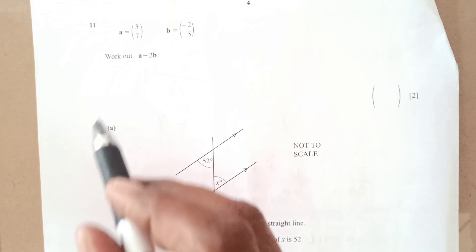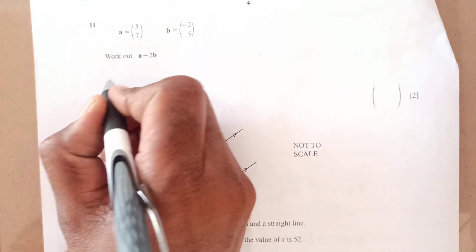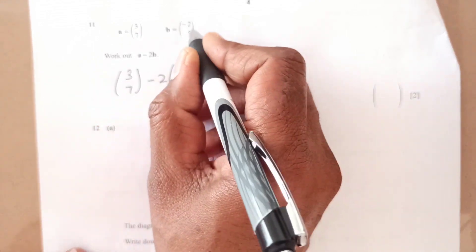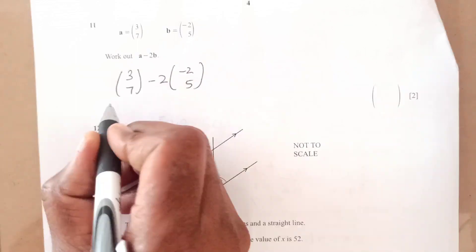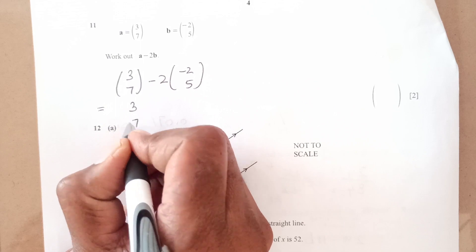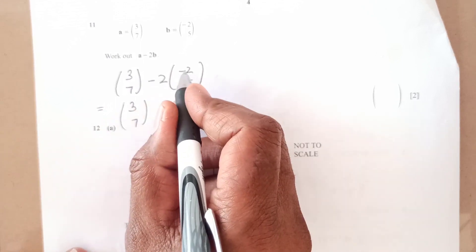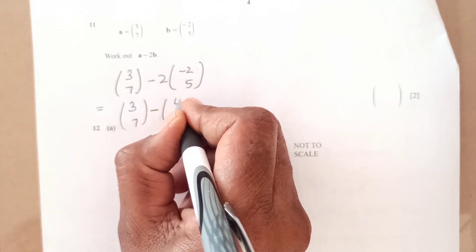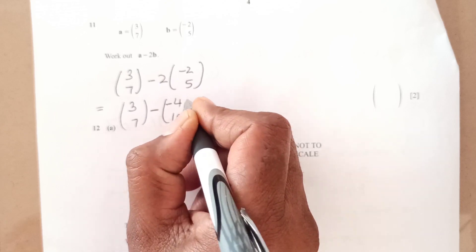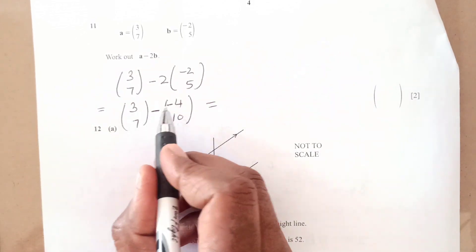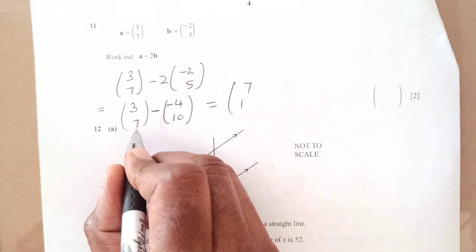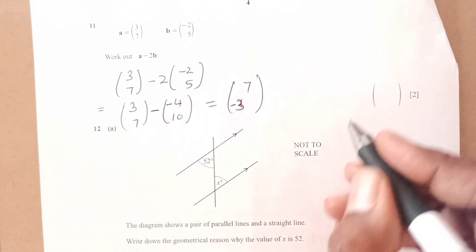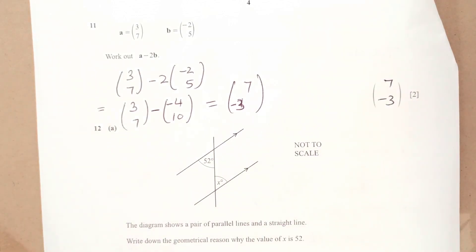Question 11, a and b are given. Work out a minus 2b simple. Just replace the values. This is a is 3, 7 minus 2 into b. b is negative 2 and 5. So now just solve it. This is 3, 7 minus this 2 is going to be added inside. So minus then 2 times 2 is negative 4, 2 times 5 is 10. So now we are going to subtract is 3 minus minus 4. That is going to be 7 and 7 minus 10 is minus 3. So final answer is 7 and negative 3.